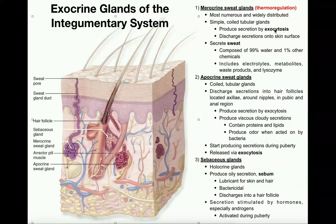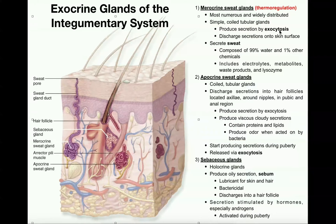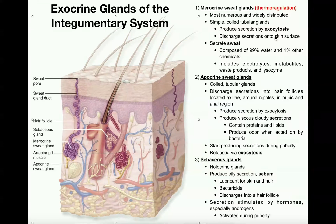Merocrine sweat glands produce their secretions via exocytosis, and eventually discharge the secretion — which is sweat — onto the surface of the body. It's important to know that they produce their secretions by exocytosis and then discharge those secretions onto the surface of the skin.